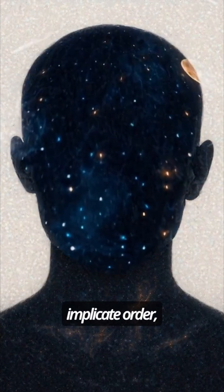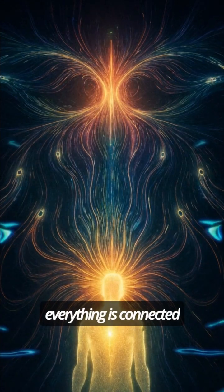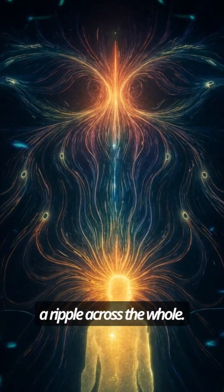He called it the implicate order, a hidden field where everything is connected and every thought is a ripple across the whole.